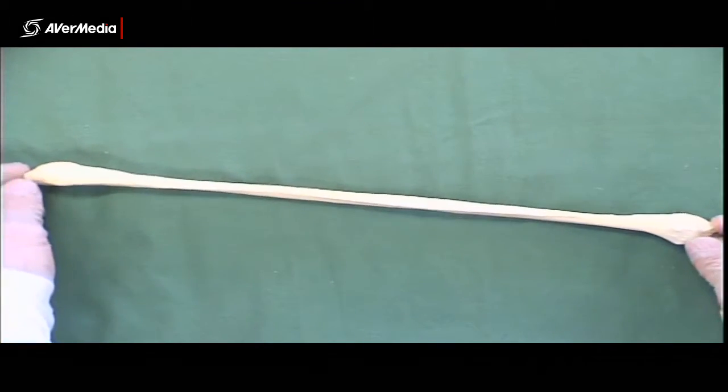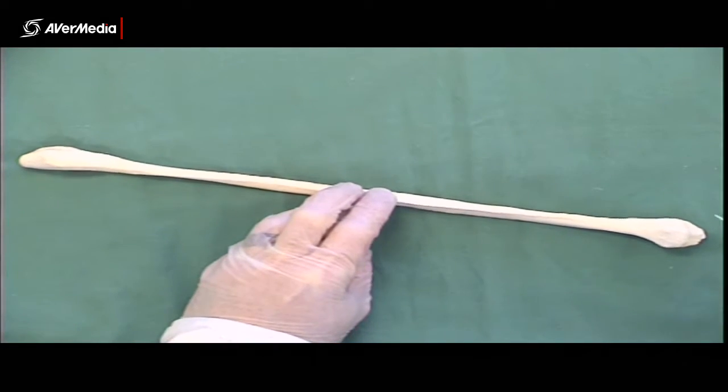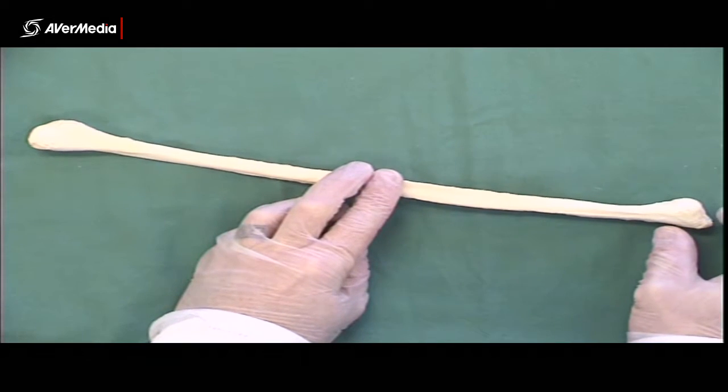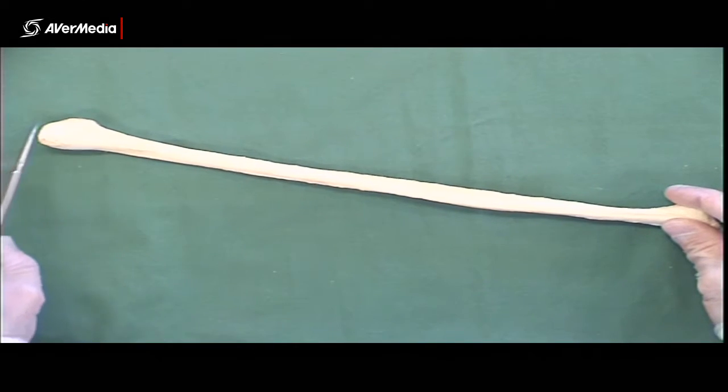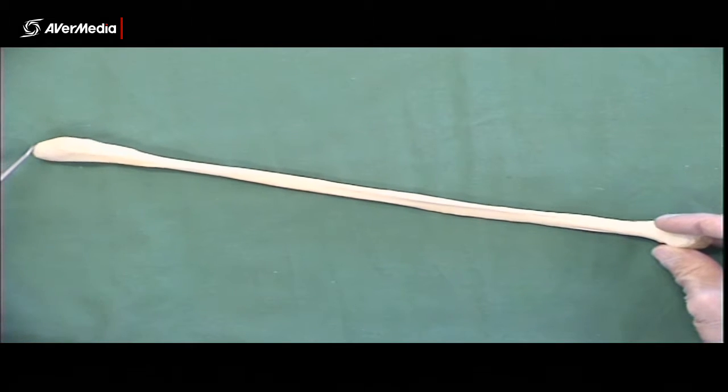Looking at a fibula, it's a bit tricky to tell what's what at first glance. This is the head of the fibula up this end, and it's a little bit more compact than the lateral malleolus. The lateral malleolus is a little bit more elongated, a bit more stretched out.